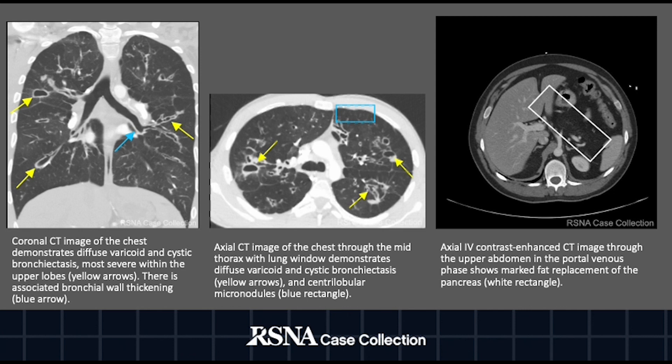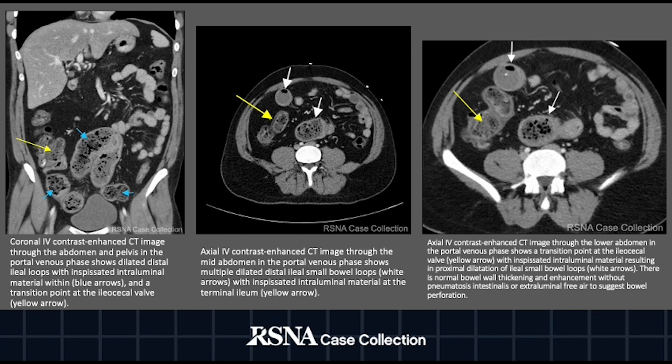The white rectangle on the upper abdomen CT represents fatty replacement of the pancreas. Here we have coronal and axial views of the CT images of the abdomen in the portal venous phase. The yellow arrows represent the transition point at the ileocecal valve, and the yellow arrow in the middle image represents the terminal ileum. The white and blue arrows represent dilated distal ileal loops with inspissated intraluminal material proximal to this transition point.